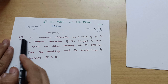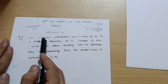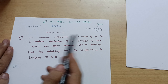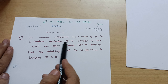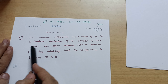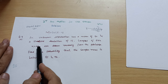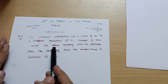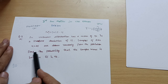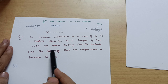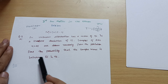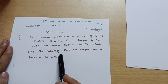So today I will discuss model paper question number seven (a): an unknown distribution has a mean of 90 and a standard deviation of 15. Samples of size n = 25 are drawn randomly from the population. Find the probability that the sample mean is between 85 and 92.